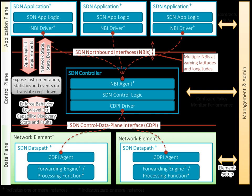The explosion of mobile devices and content, server virtualization, and the advent of cloud services are driving the networking industry to re-examine traditional architectures. Many conventional networks are hierarchical, built with tiers of Ethernet switches arranged in a tree structure. This design made sense when client-server computing was dominant, but such a static architecture is ill-suited to today's dynamic computing and storage needs in enterprise data centers, campuses, and carrier environments.